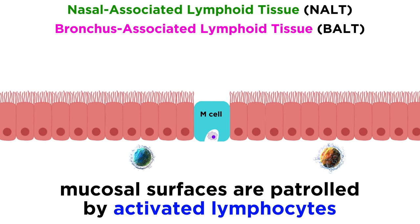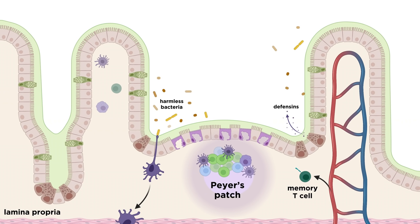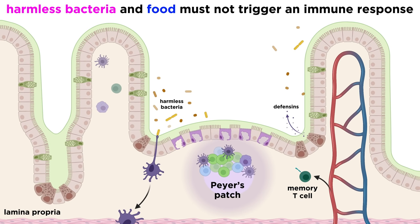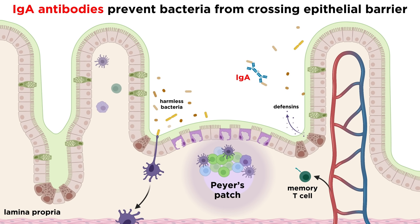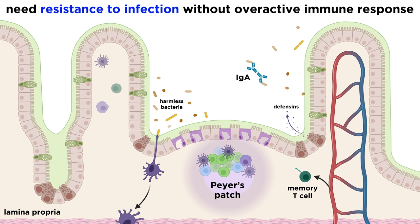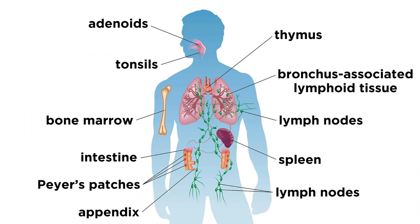Mucosal surfaces are often patrolled by activated lymphocytes, even in the absence of infection. MALT is also uniquely effective at regulating immune responses. Think of all the harmless bacteria, food, and other particles that pass through mucosal surfaces that should not trigger an immune response. Regulatory responses in the mucosa are constantly at play to help prevent immune activation in response to these harmless antigens. B-cells at mucosal sites often produce a specific class of antibody called IgA that is good at preventing bacteria from crossing the epithelial barrier without inducing an immune response.